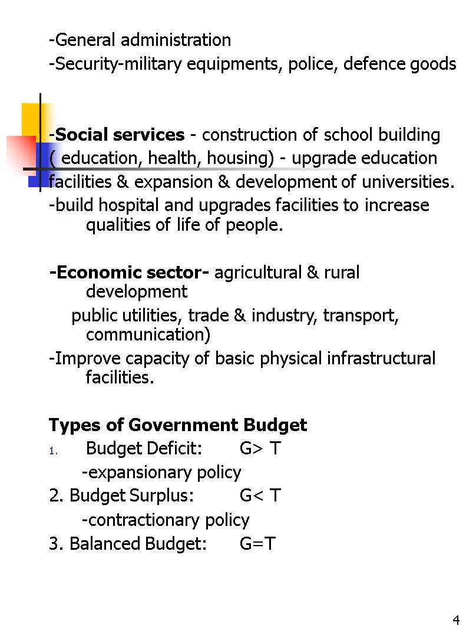For the economic sector it is very important because we try to improve the capacity of basic physical infrastructure and facilities. These are the types of government expenditure. When asked about the types of government budget, there are three types: deficit, surplus, and balanced budget. Budget deficit means government expenditure is more than taxes. Budget surplus means government expenditure is less than taxes. Balanced budget means government expenditure is equal to tax revenue — G equals T.